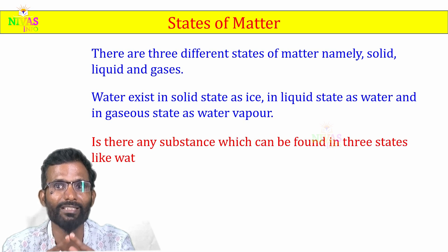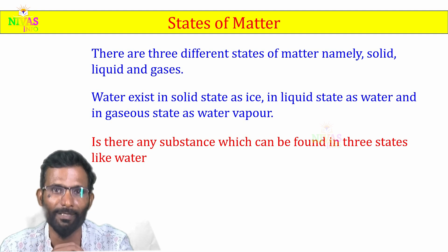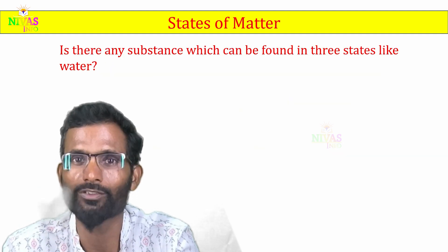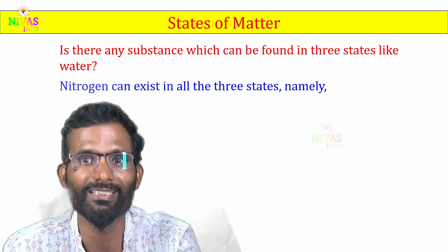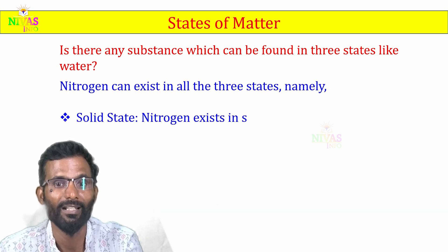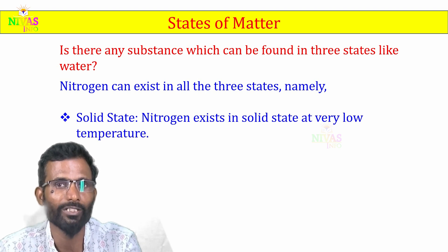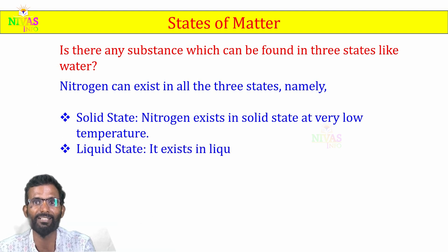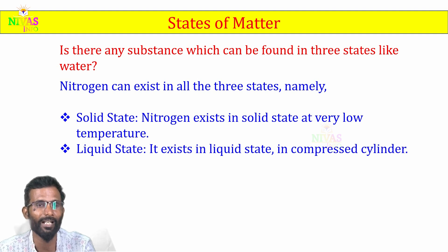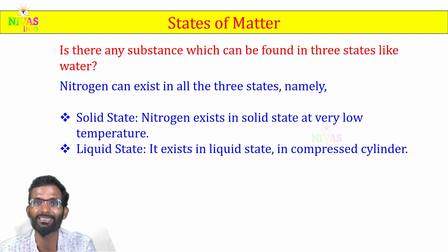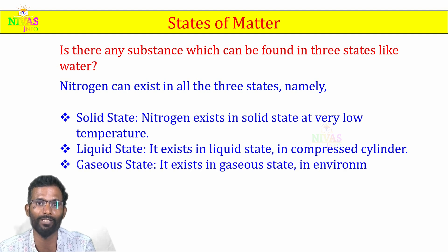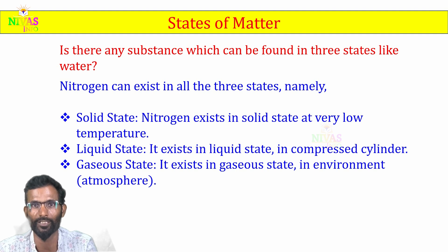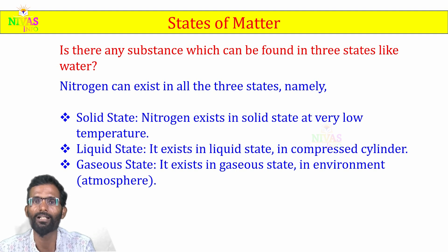Is there any substance which can be found in three states like water? Yes — nitrogen. Nitrogen can exist in all three states. Nitrogen exists in solid state at very low temperature. It exists in liquid state in a compressor cylinder, where nitrogen is compressed into liquid state. And it exists in gaseous state in the environment, where nitrogen is present as a gas.